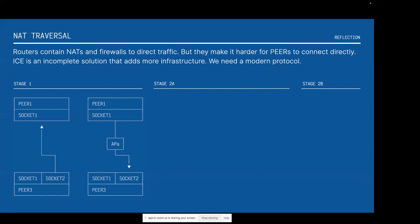I'm sure everybody here has heard of NATs, obviously firewalls — these are the bane of our existence and ICE is not cutting it. STUN and TURN servers don't do what we need. It's incomplete, and I'll get to why it's basically a non-starter. It serves some purpose in some ways, but it's not what we're trying to do here. We're trying to have peer to peer with very little or no infrastructure at all. So the first stage of what we need to do is NAT traversal. Some people call that hole punching. We call it reflection — kind of like looking in the mirror and seeing what you look like.